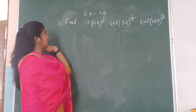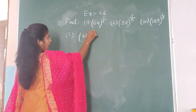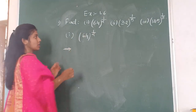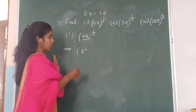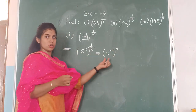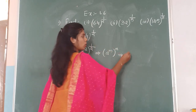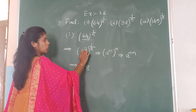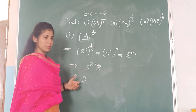Exercise 1.6, first question: find the value of the given exponents. The first one is 64 to the power of 1 by 2. There are two methods — direct method and prime factorization method. In the direct method, 64 can be written as 8 squared, whole to the power of 1 by 2. Using the second law — A to the power of M whole to the power of N equals A to the power of M into N — we multiply 2 into 1 by 2, the 2s cancel, and the answer is 8.